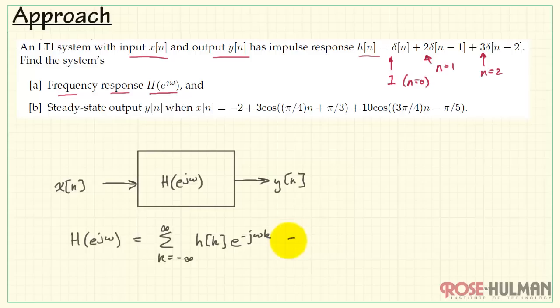We can then put these into the summation. We would have 1 times e to the minus j omega, taking k equals 0. We take our next coefficient, e to the minus j omega times 1, and then 3 times e to the minus j omega times 2.